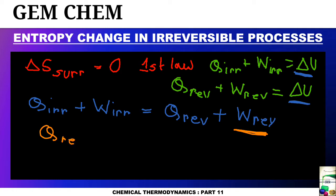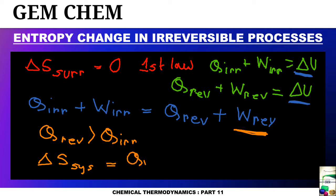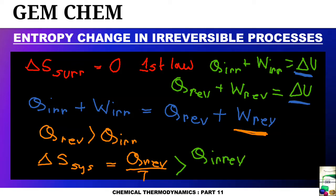If we write delta S system, which equals q reversible divided by T for a reversible system, this equals q irreversible divided by T for an irreversible system — and q reversible by T is much greater than q irreversible by T. Taking T to the other side of delta S, we can proceed further.